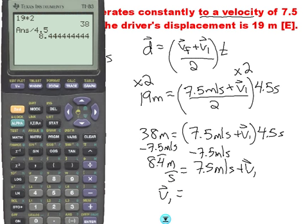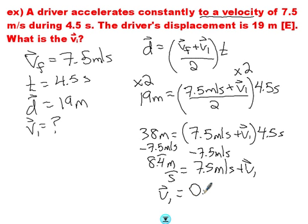And I've got myself my initial velocity. So 8.4 repeating minus 7.5 is 0.94 meters per second. And hey, that's even good sig digs and all that sort of stuff too. So that wasn't so bad. Maybe these kinematics equations aren't so bad after all.